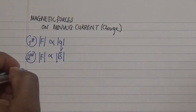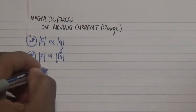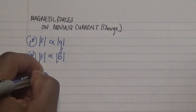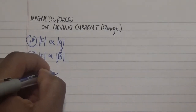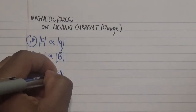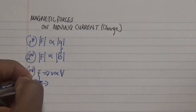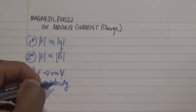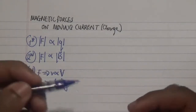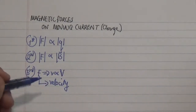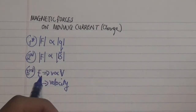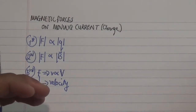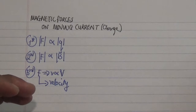Another factor affecting the force is that it is dependent on the particle's velocity. If I have a quantity of charge — either positive or negative — the velocity of that charge in a magnetic field tells us more about its dependence with respect to the magnetic force.